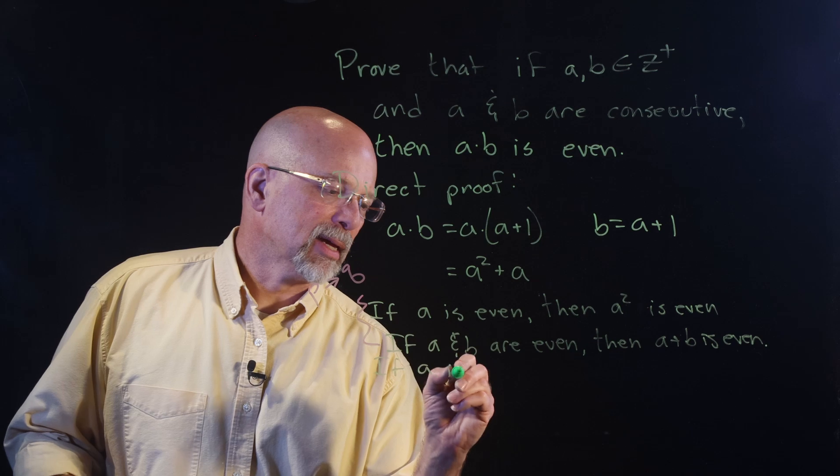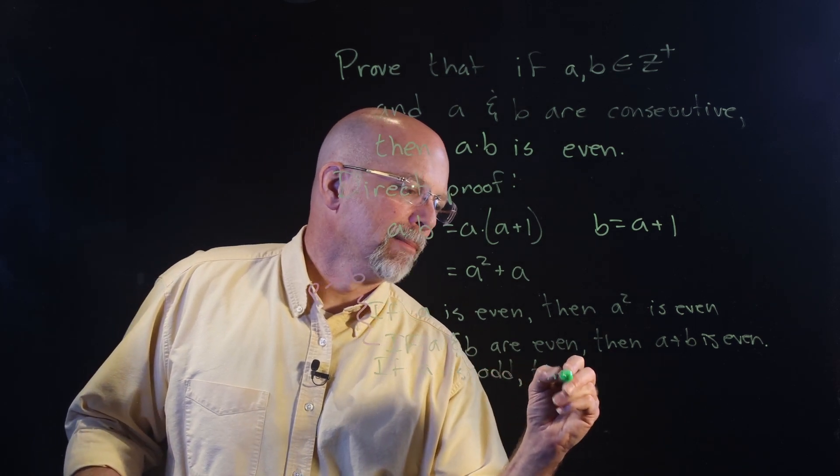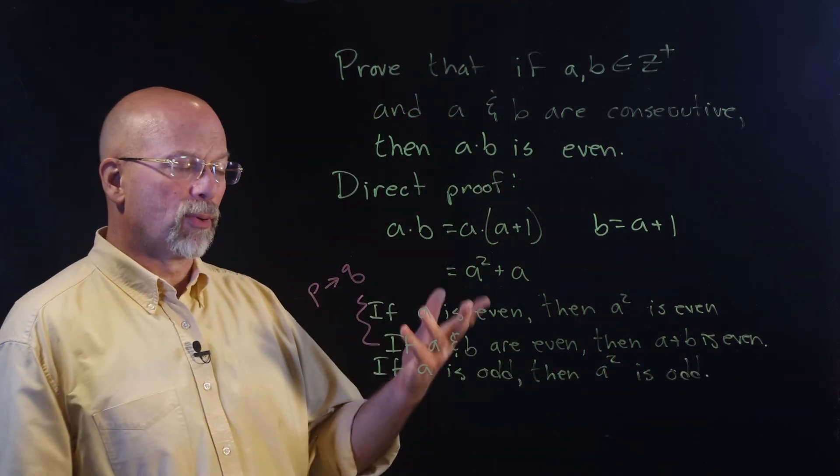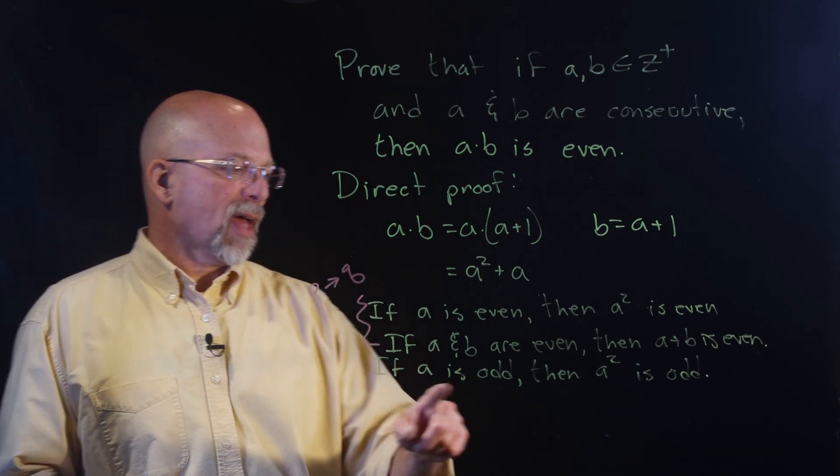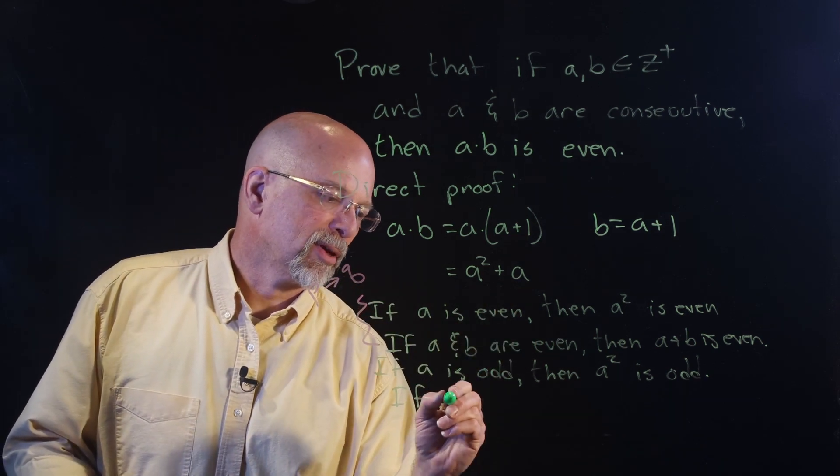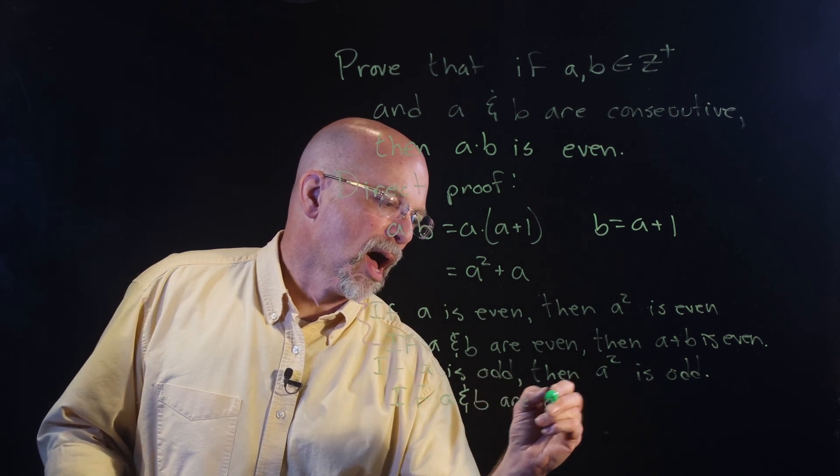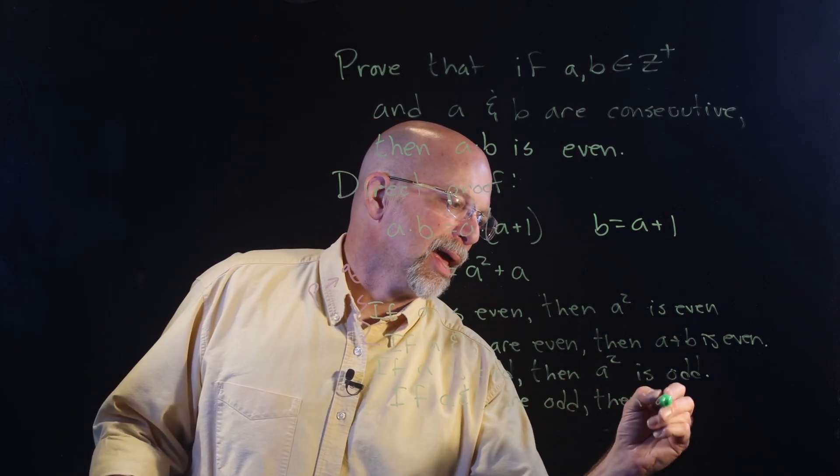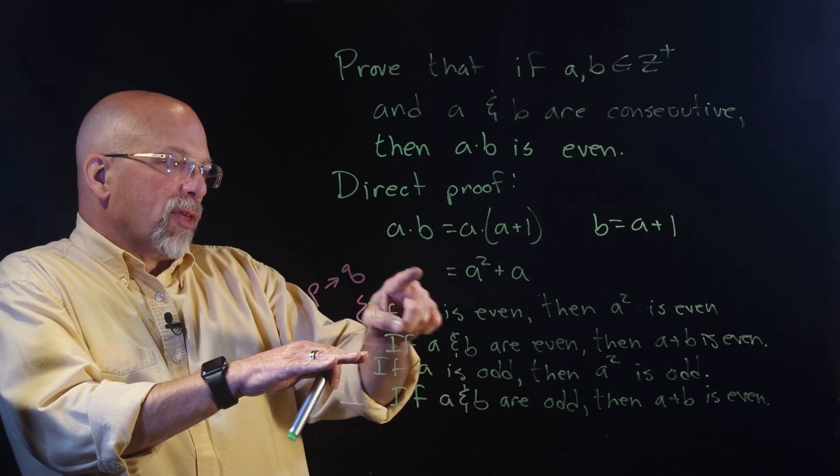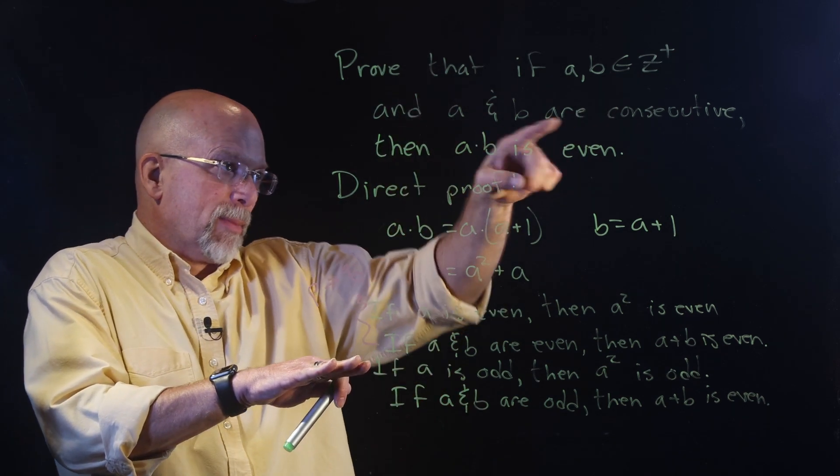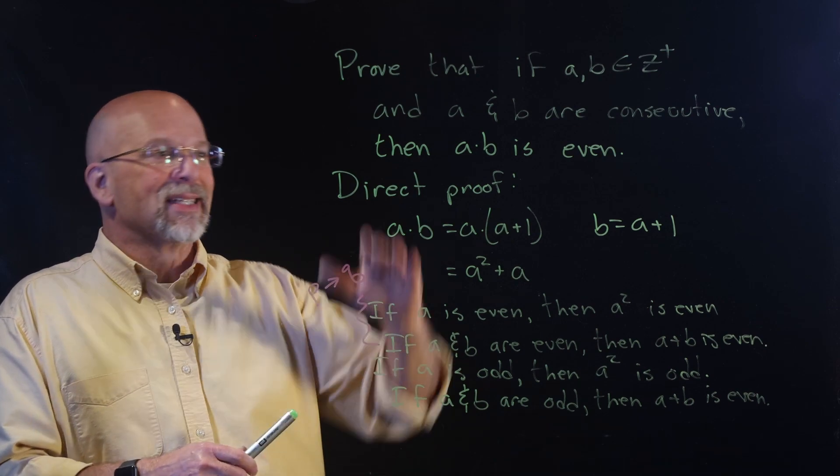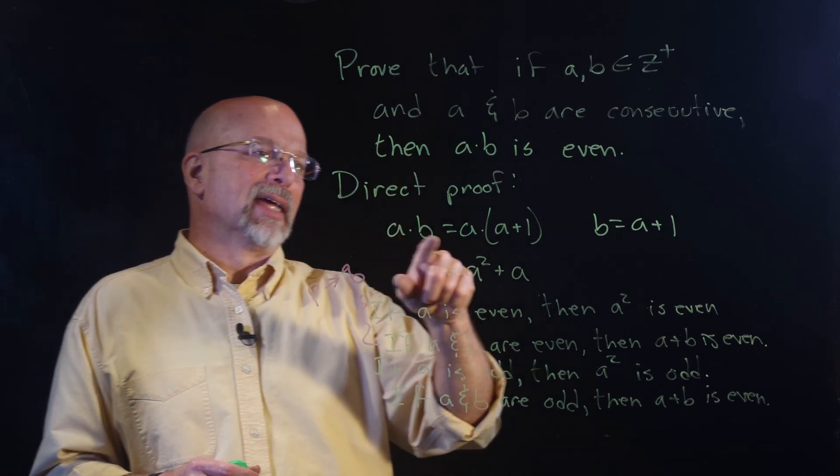Now, if a is odd, then a squared is odd, right? Also, a proof that we did in a previous lesson. Now, if a is odd, then a squared is odd, and what you have is an odd number plus an odd number. And so, if a and b are odd, then a plus b is even. And so, we see now that this is true, that the conclusion follows the premise, if a is odd, and if a is odd, which means that by direct proof, we've proved that a times b is even.